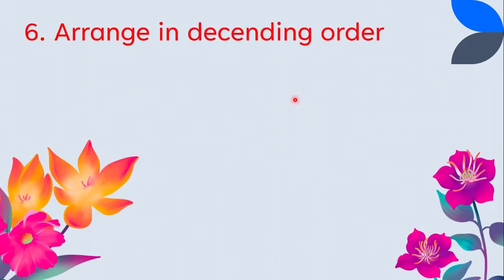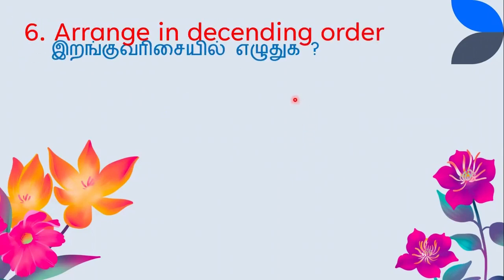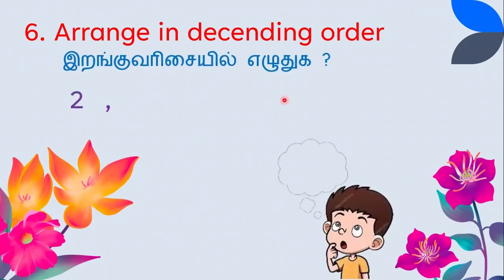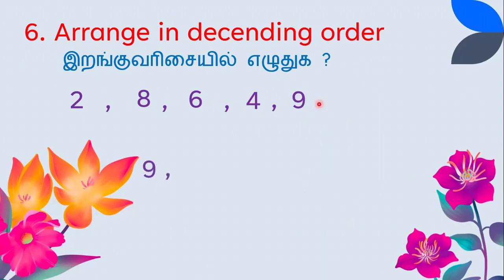Arrange in descending order: 2, 8, 6, 4, and 9. The big number is 9 first, then 8, then 6, then 4, then 2. That is descending order.